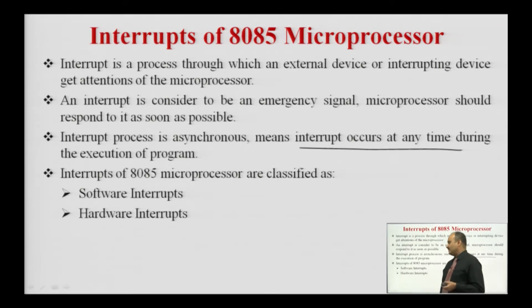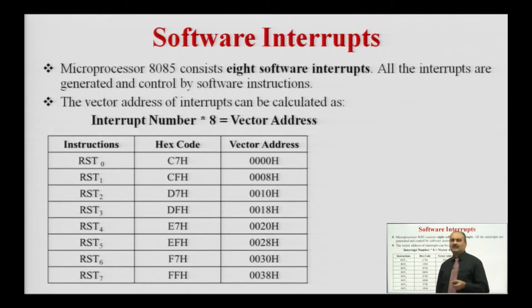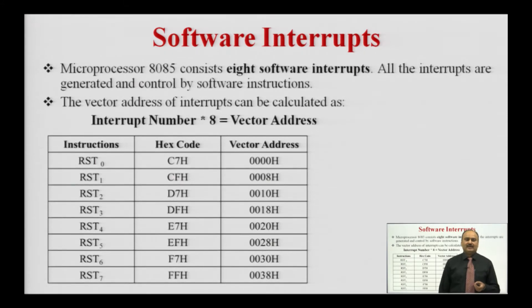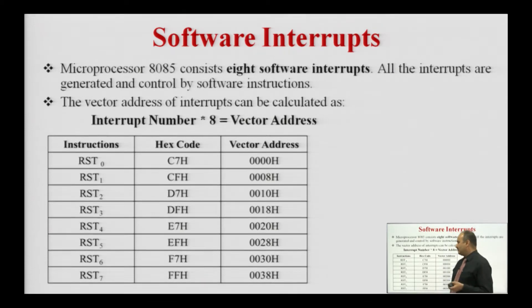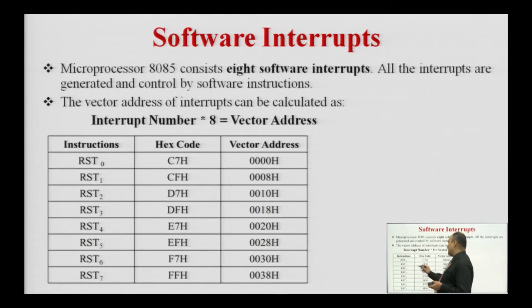In the 8085 microprocessor, we have two types of interrupts: software interrupts and hardware interrupts. The 8085 microprocessor consists of 8 software interrupts: RST0, RST1, RST2, RST3, RST4, RST5, RST6, and RST7. Whenever the microprocessor executes a software instruction, it executes the interrupt service routine, which starts from the vector address. The vector address can be calculated using the equation: interrupt number multiplied by 8 gives the corresponding vector address. For example, for RST0, the interrupt number is 0 multiplied by 8, giving vector address 0000H.